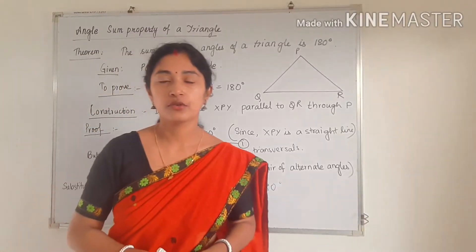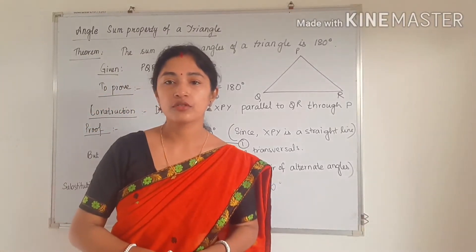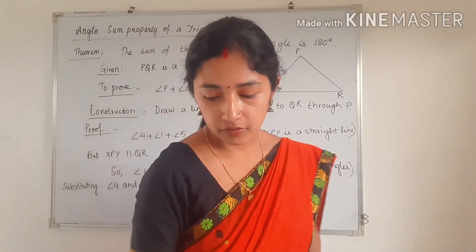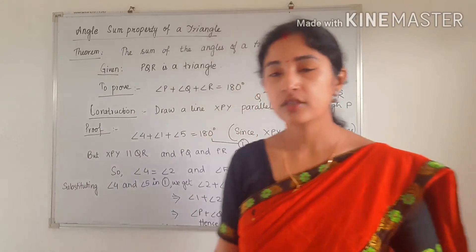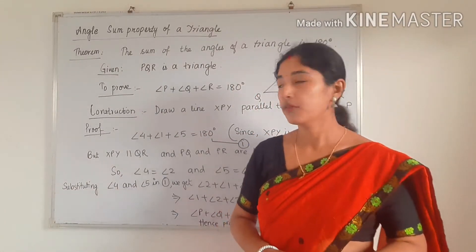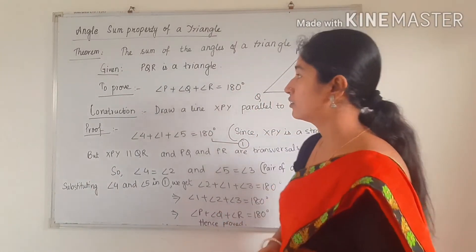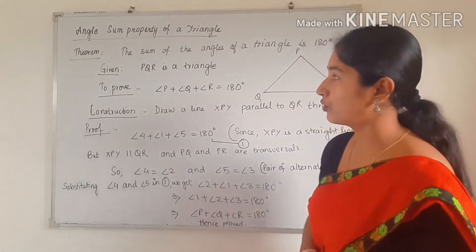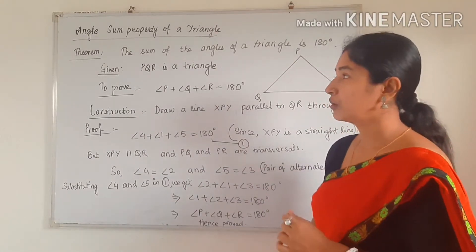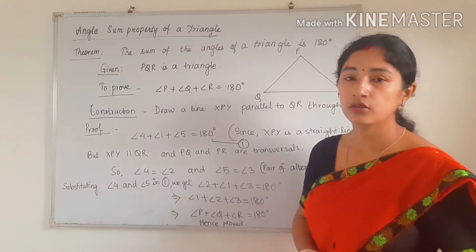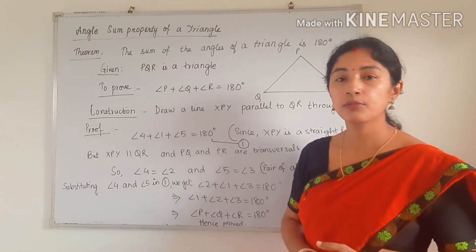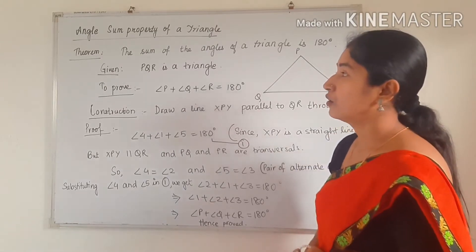Hello students of class 9. Today I am going to start a new topic. I have already discussed the two exercises of lines and angles. Today we will start one theorem — we will do the proof of one theorem. The theorem is the angle sum property of a triangle.